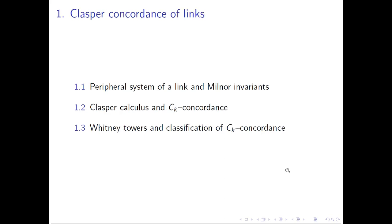In the first part, I will start by defining the peripheral system of a link, and then show how it can be used to obtain its Milnor invariants. I will then introduce the concept of clasper surgeries on links, developed by Kazuo Habiro, with the corresponding notions of CK equivalence and CK concordance. Finally, I will present the classification of links which are CK concordant to the unlink, obtained by James Conant, Rob Schneiderman, and Peter Teichner, using the notion of Whitney Towers.